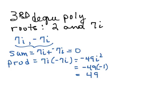So the equation for these two roots would be x squared minus 0x, so we're not going to write that, plus 49 equals 0. Now if we consider our other root of 2, that comes from the factor x minus 2.